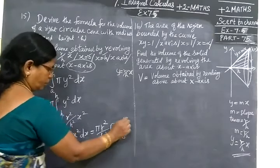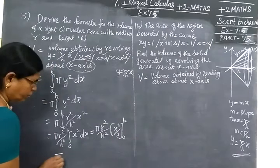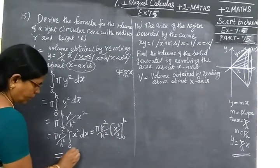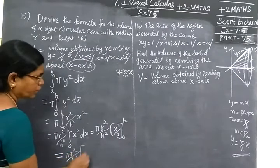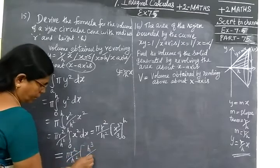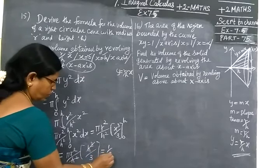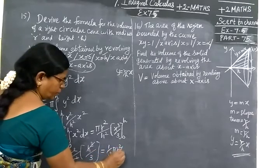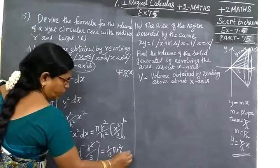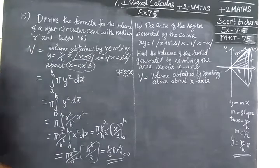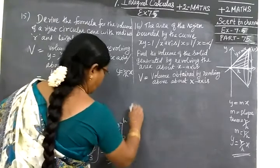Now you substitute π R²/H² times H³/3. So 1/3 π R² times H. So the answer is 1/3 π R² H for the volume of the cone. Next we are finding the area of the region.